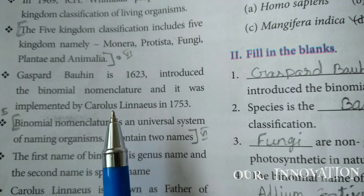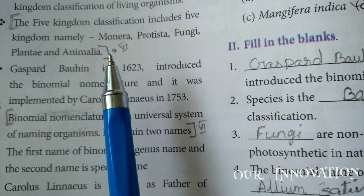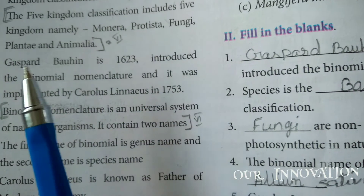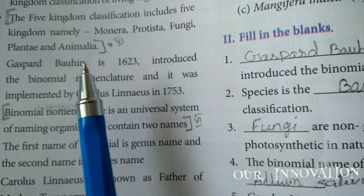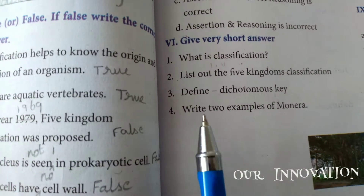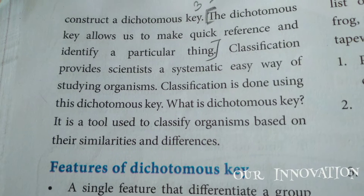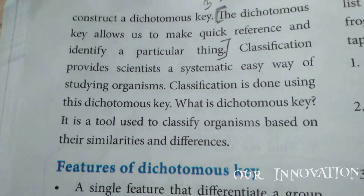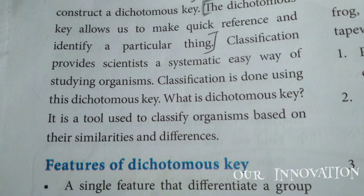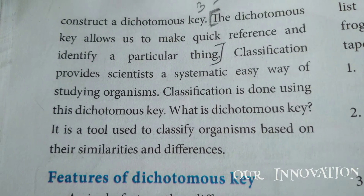The five kingdom classification includes five kingdoms namely Monera, Protista, Fungi, Plantae, and Animalia. Third question: define dichotomous key. Page number 72. The dichotomous key allows us to make quick reference and identify a particular thing.